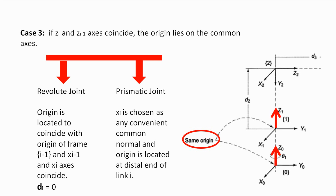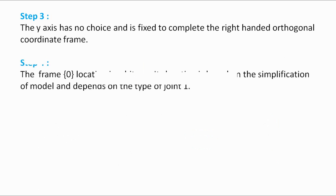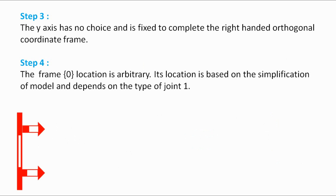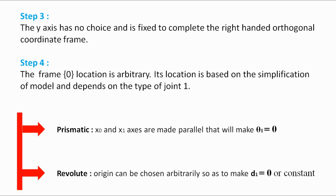Now we move to step 3. The Y-axis has no choice and is fixed to complete the right-handed orthogonal coordinate frame. In step 4, we assign frame 0. Frame 0 location is arbitrary — its location is based on simplification of the model and depends on the type of joint 1. If the joint is prismatic, x0 and x1 axes are made parallel, which will make theta 1 equal to 0. If the joint is revolute, the origin can be chosen arbitrarily such that it makes d1 equal to 0 or equal to some constant value.